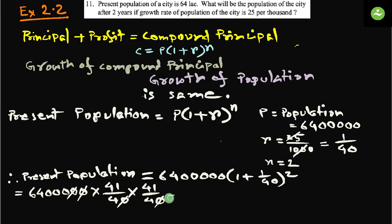Now simplify. Zero gone, one zero gone, another zero gone, another zero gone. Equals to 67 lakhs 24,000. What is the unit? Persons. So the answer is 67 lakh 24,000 persons.